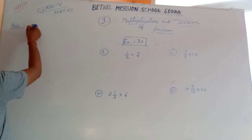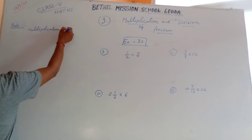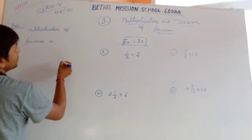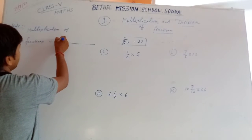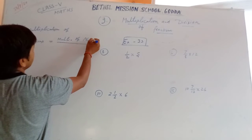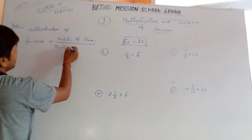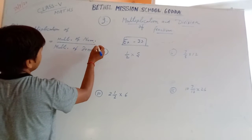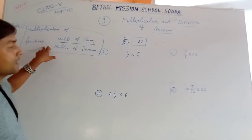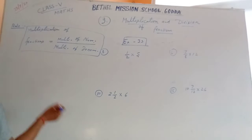The rule says that multiplication of fractions equals multiplication of the numerators by multiplication of the denominators. In short, I have written this is the rule: multiplication of fractions equals multiplication of the numerators by multiplication of the denominators.